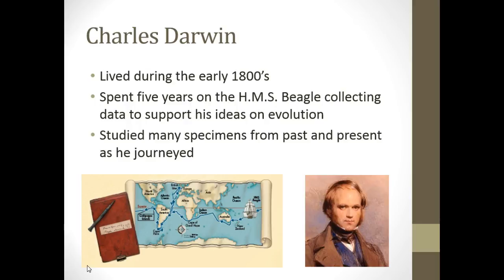Charles Darwin lived during the 1800s. He spent a lot of his early childhood trying to figure out what he wanted to be as he grew up. His dad tried to direct him into medicine to be a doctor, and he rebelled from that. Then he was going to be a clergyman, a religious guy, and he kind of rebelled from that too.